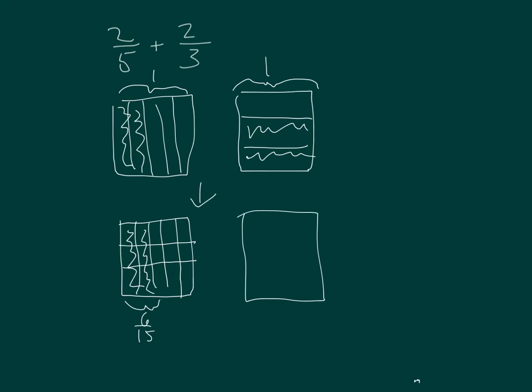And in this case, labeling we had two thirds going to fifteenths. We get ten fifteenths.